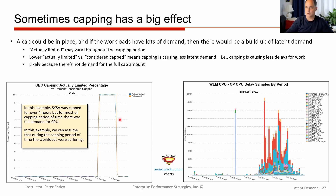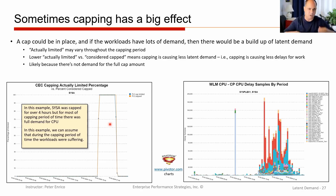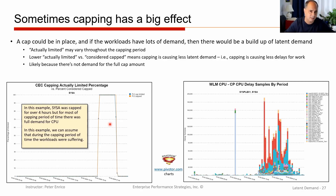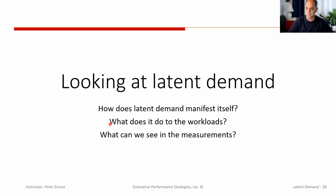It could also be something in the middle: you're capped 100% in the interval, but only delayed or percent limited by 50%, which means you were capped for the full interval but only really needed 50% of the capacity during that capped interval. Those are just indicators of when you have latent demand.